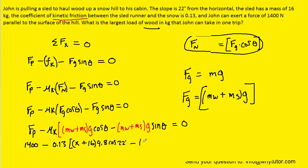And then we have minus, again the mass of the wood is unknown, we can call that x, plus the sled's mass, which was 16, times g, which is 9.8, and then times the sine of 22.